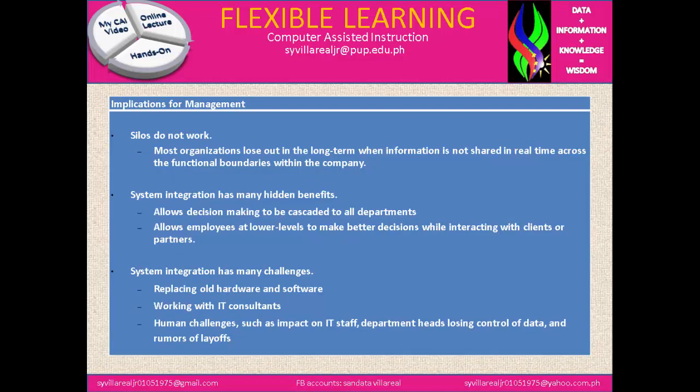Now, implications for management. Most organizations lose out in the long term when information is not shared in real time across the functional boundaries within the company. System integration has many hidden benefits, such as allowing decision-making to be cascaded to all departments and allowing employees at lower levels to make better decisions while interacting with clients or partners.